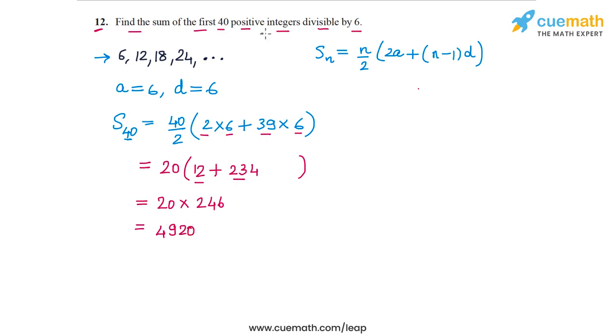The sum of the first 40 positive integers divisible by 6 is equal to 4920. This is the answer of question number 12.